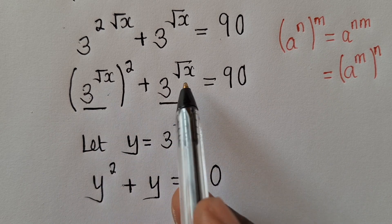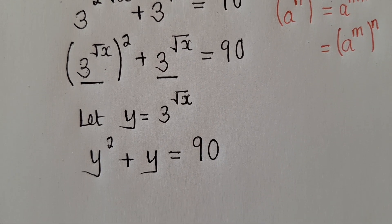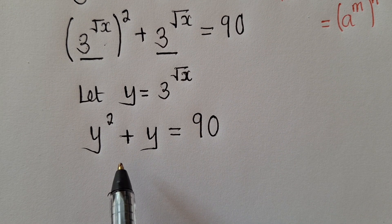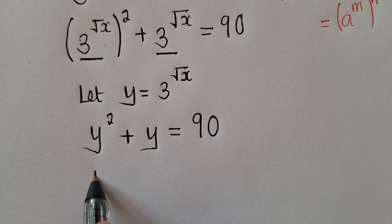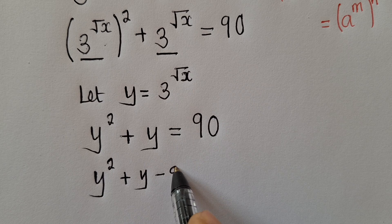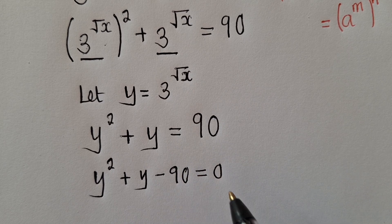And if you're able to see, there is a quadratic equation. So we can say y power 2 plus y minus 90 is equal to 0.